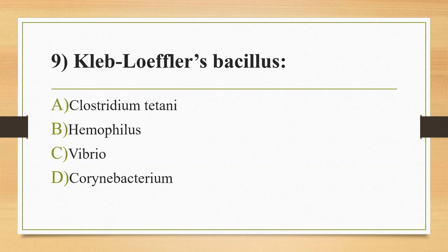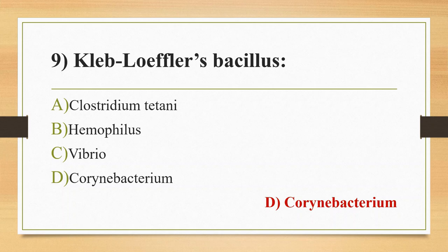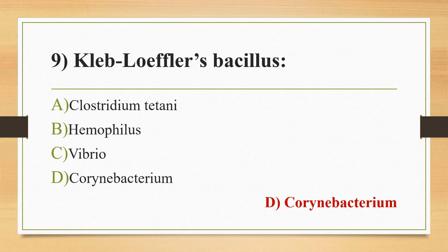Ninth question: Coryneform bacillus — Option A, Clostridium tetani; Option B, Haemophilus; Option C, Vibrio; Option D, Corynebacterium. The answer is Option D, Corynebacterium. Important points: Chinese letter pattern arrangement and Elek's gel precipitation test. Susceptibility determining test is the Schick test. Clostridium tetani is known as Nicolaier's bacillus and causes tetanus. Vibrio cholerae has darting motility and the string test is important.